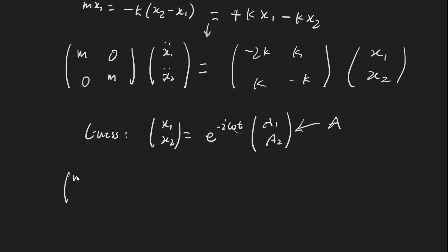So we have m, 0, 0, m, times negative omega squared, times, we'll write it out because it'll make some things cancel, times A is equal to minus 2k, k, k, minus k, times e to the minus i omega t.